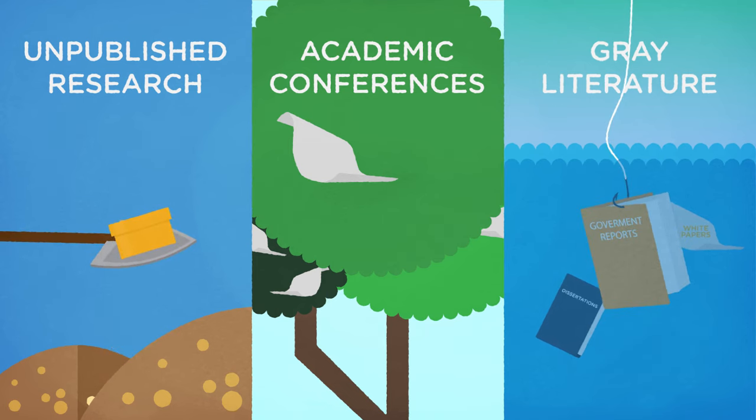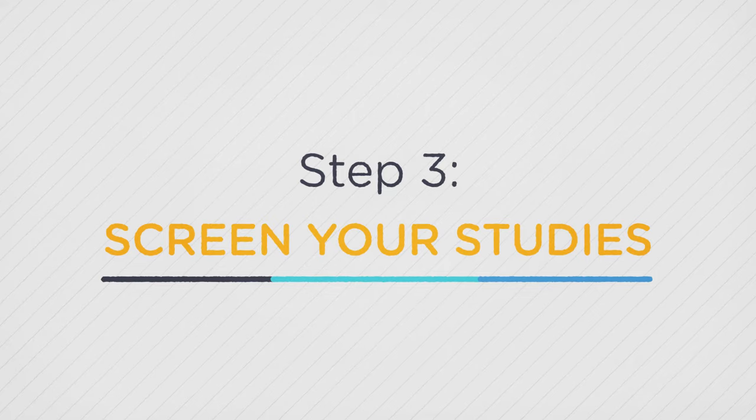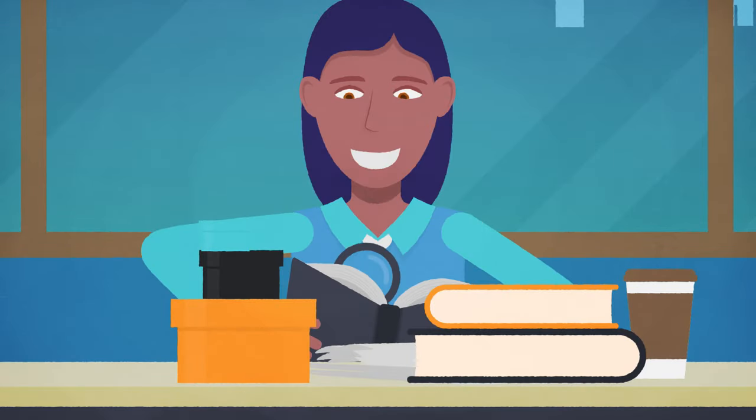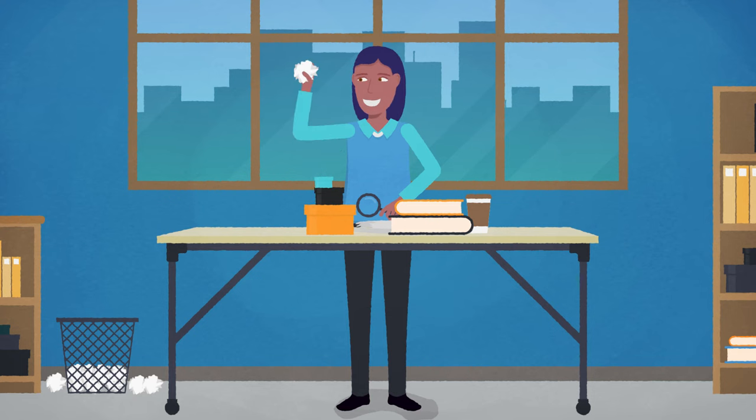Once you've searched everywhere for evidence, you can move on to step three, screen your studies. In this step, you take a careful look at what you've gathered, removing evidence that doesn't answer your question or has research methods you want to avoid.